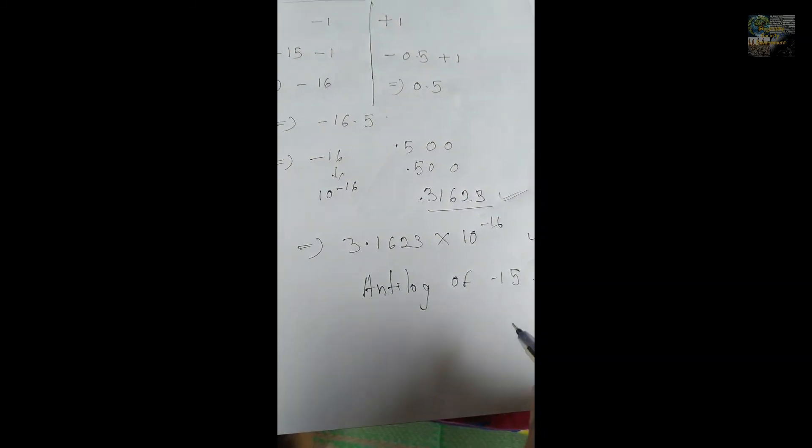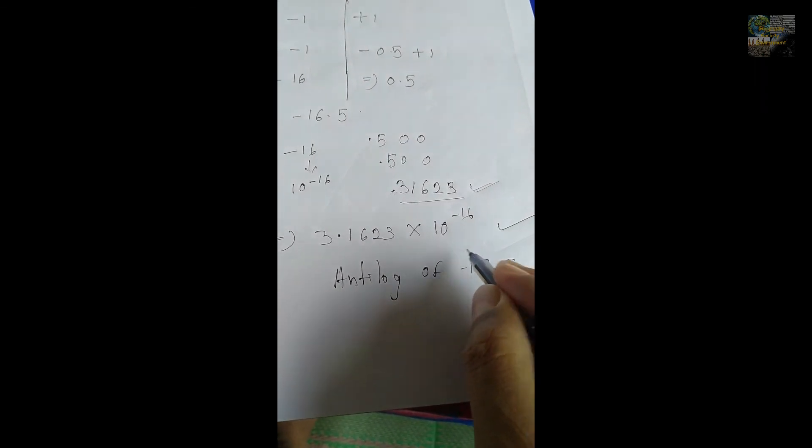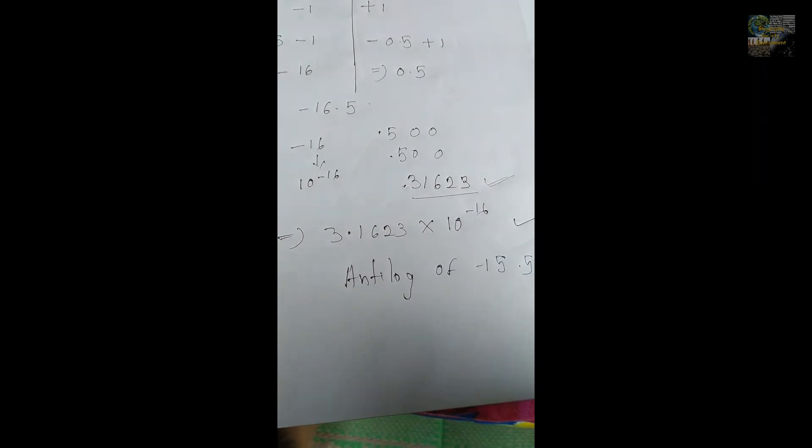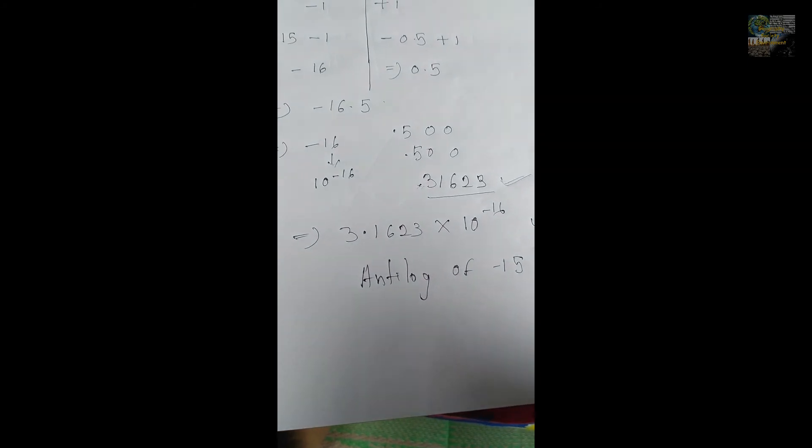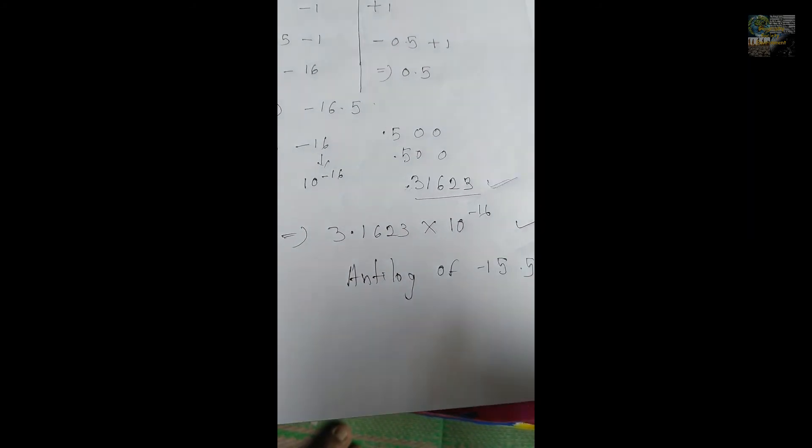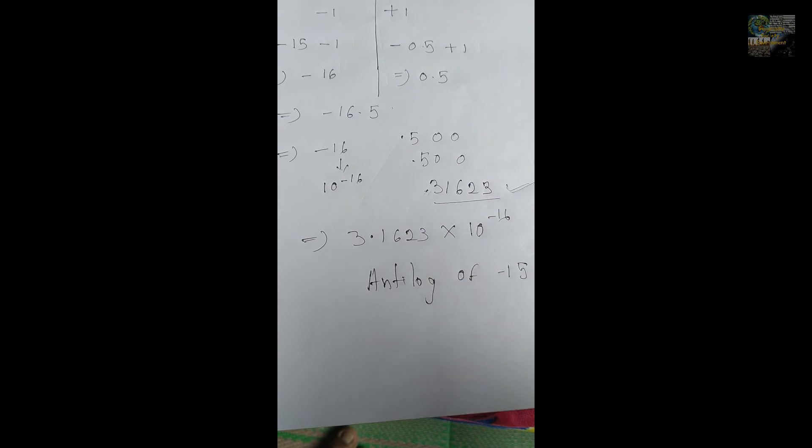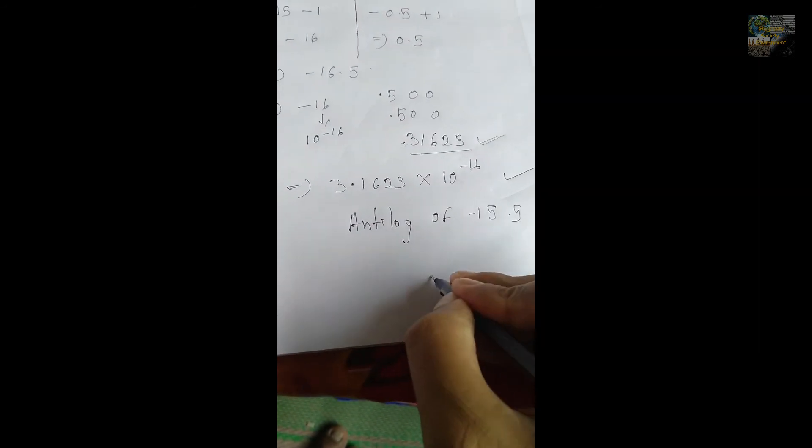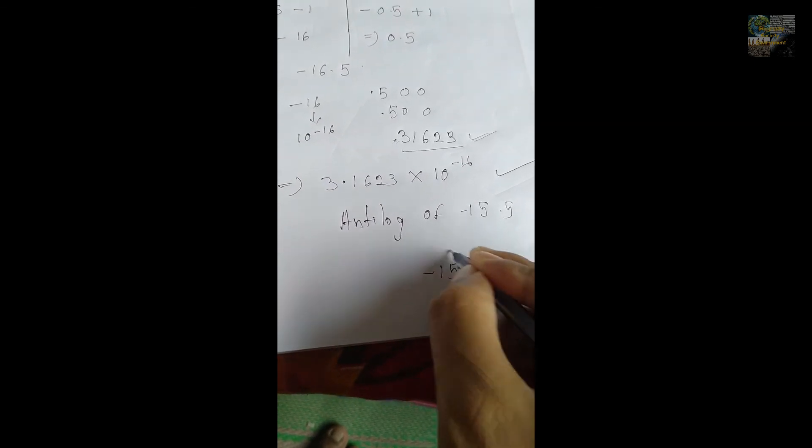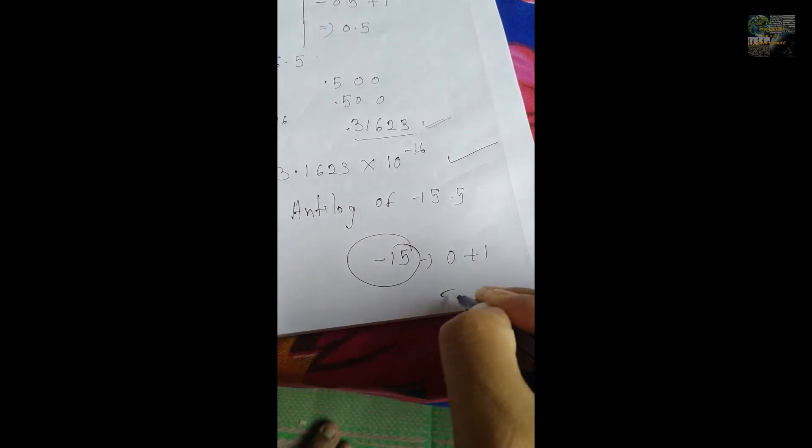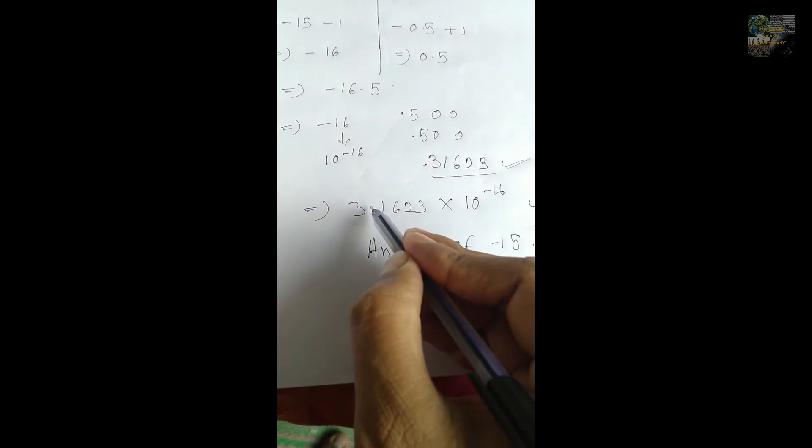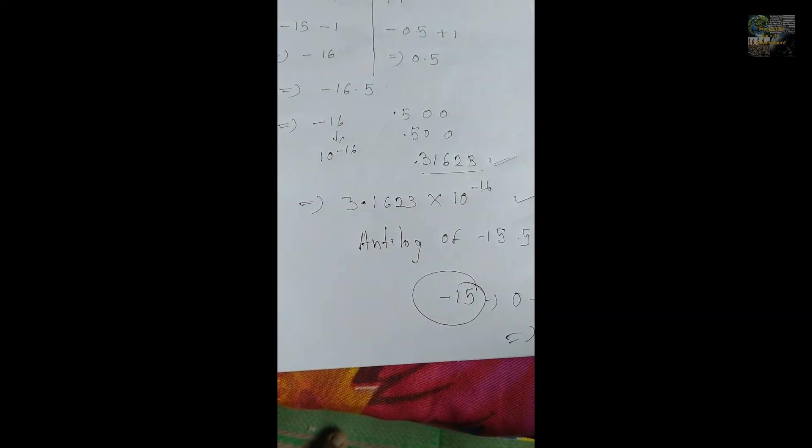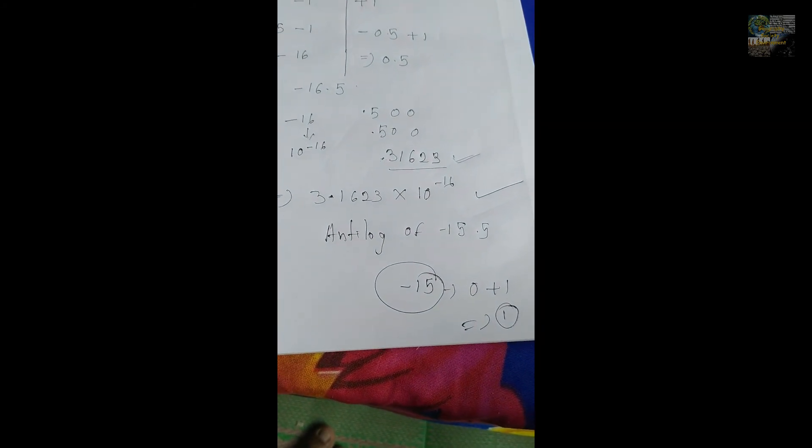The value 15.5 is a negative value, and any kind of negative value is considered as 0 in logarithm function. So, 0 plus 1 - I am calculating the decimal place. The decimal place will be minus 15 designated as 0, so 0 plus 1 equals 1. That's why I have placed the decimal after 3: 3.1623 into 10 to the power minus 16.